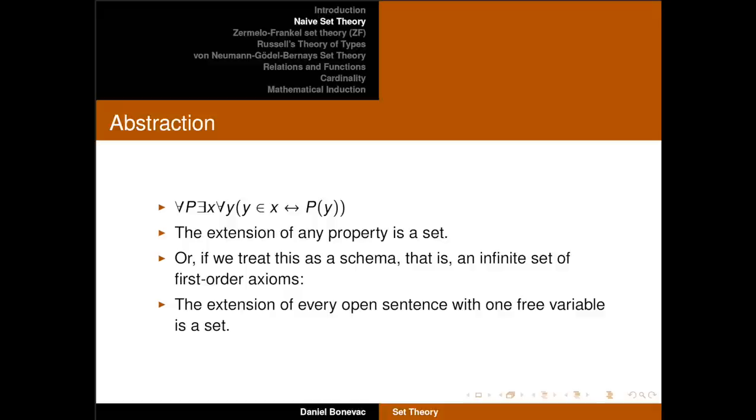Let's introduce a predicate: 'does not belong to itself.' So x has this property of not belonging to itself if and only if x does not belong to x. Now, let's think about how that connects to our axiom of abstraction. That principle said that the extension of every property is a set — for any property P, there is a set of all and only the things that have that property. That gets us into trouble, because that implies there should be a set of all the things that have the property of not being members of themselves.